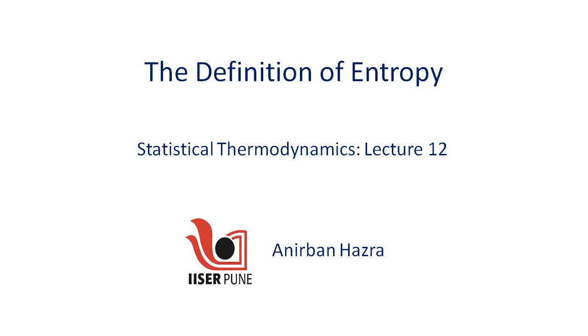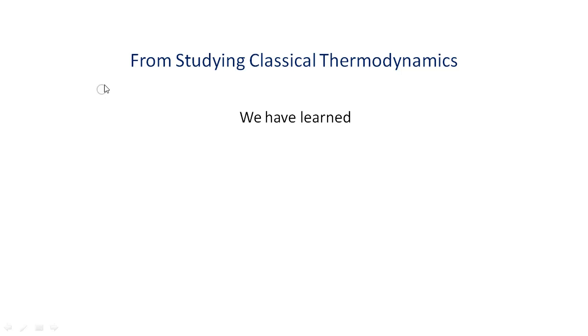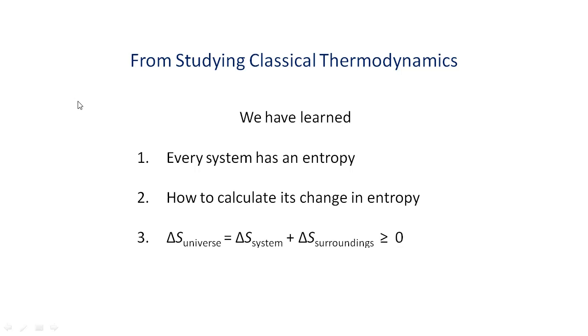In the previous lectures, we have learned that every object or every system has an entropy and we have learned how to calculate the change in entropy when the system goes from one equilibrium state to another. We have also learned that the change in entropy of the system and its surroundings considered together is either 0 or positive when the system undergoes a change.